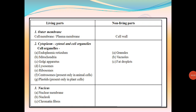There are two parts of a cell: the living part and the non-living part. The cell membrane is a living membrane present in every cell. The cell wall is a non-living part present only in plant cells. The living parts of cytoplasm include endoplasmic reticulum, mitochondria, Golgi apparatus, lysosomes, ribosomes, centrosomes (present only in animal cells), and plastids (present only in plant cells). The non-living parts of the cytoplasm are granules, vacuoles, and fat droplets. The living parts of the nucleus are the nuclear membrane, nucleoli, and chromatin fibers. There are no non-living parts in the nucleus.